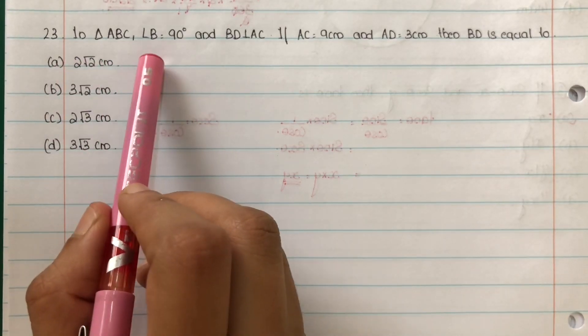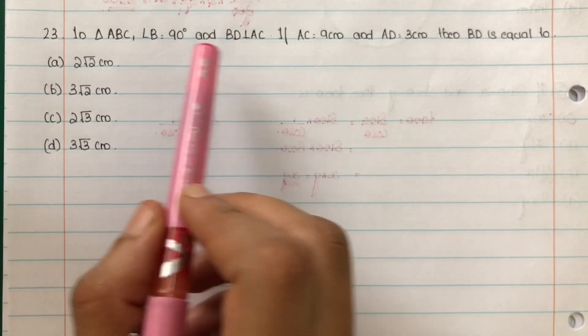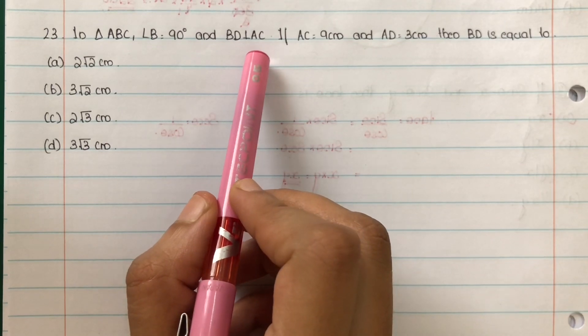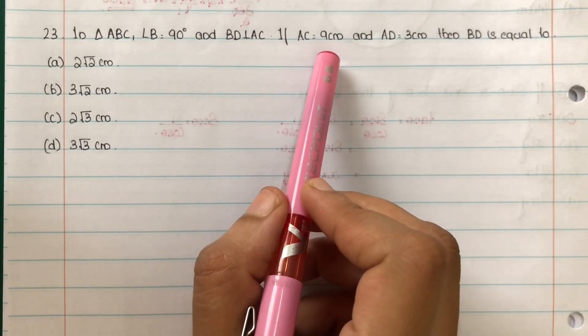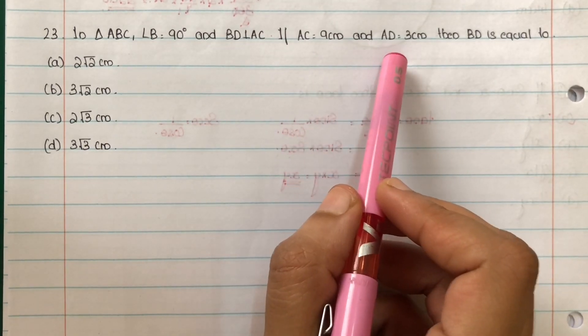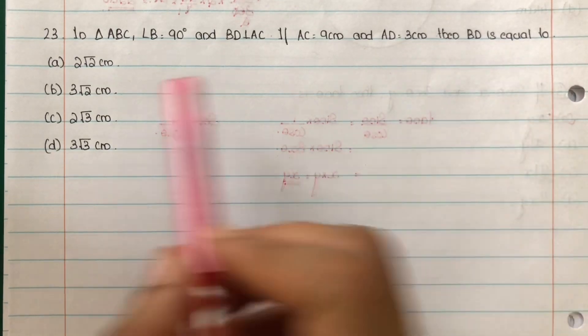In triangle ABC, angle B is equal to 90 degrees and BD perpendicular to AC. If AC equals 9 centimeters and AD 3 centimeters, then BD is equal to which option?